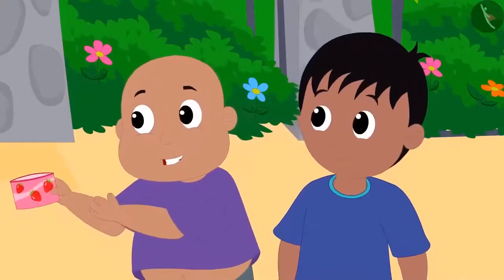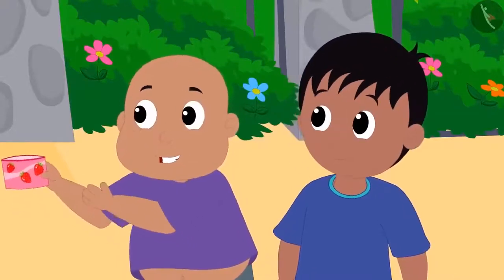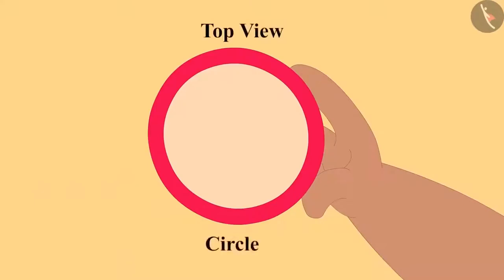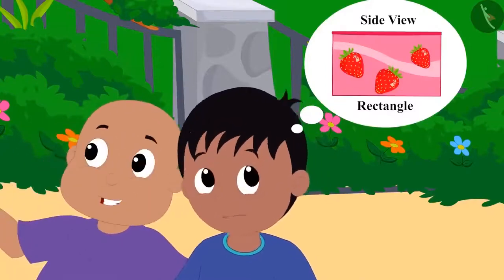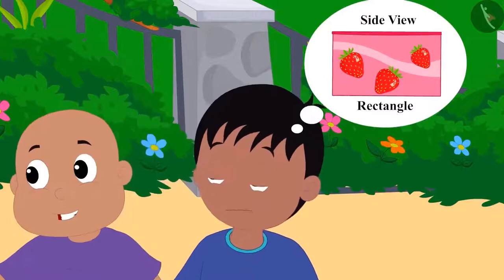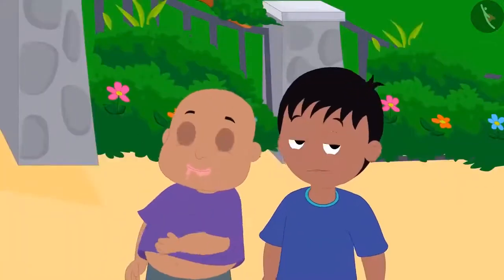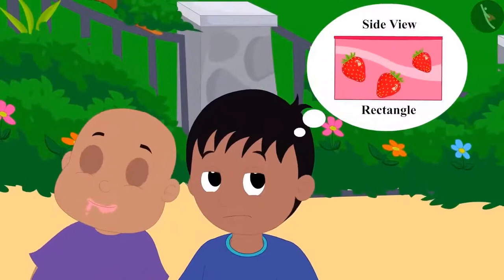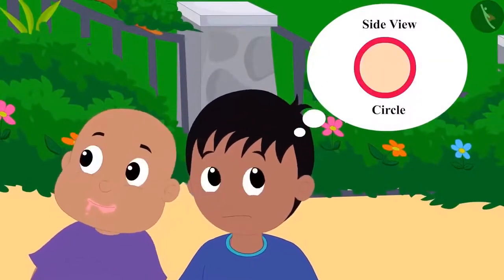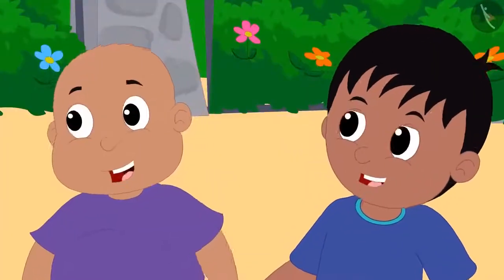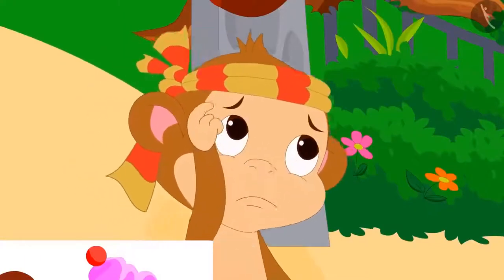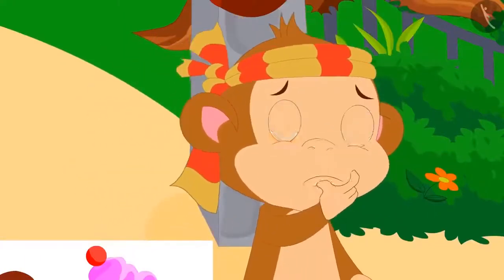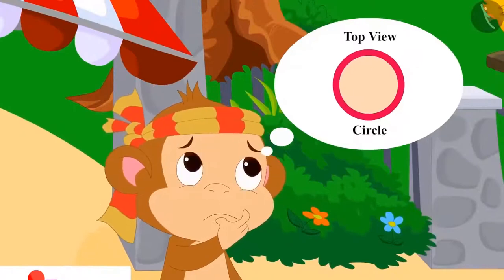Bablu showed him the cup from above — that is top view — and said, wrong answer. This is a circle. Raju saw the cup from one side and to him it looked like a rectangle. Babban ate the ice cream, and Raju began to think about how Bablu made a fool of Babban. Bablu and Raju laughed and started walking home, while Babban kept scratching his head thinking about how Raju and Bablu managed to fool him.